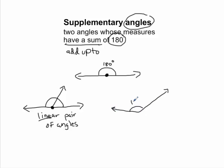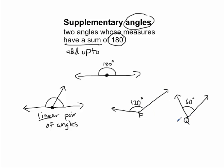Let's consider this angle to be 120 degrees, and then if I have another angle — let me make this one about 60 degrees. I'm going to name this angle P and this one angle Q. So here we have a pair of angles. Notice that they're not adjacent — they don't have the same vertex and they don't have a common ray like a linear pair does. But if I were to ask you: are angles P and Q supplementary?